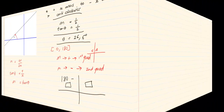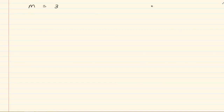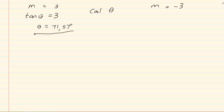Let's try another example. If m is equal to 3, we can immediately say tan theta is equal to 3. In your calculator, press shift, tan, 3. Rounding off, we get theta is equal to 71.57 degrees. Since the gradient is positive, we are in the first quadrant — and since we are on a straight line, we only work in the first or second quadrant. Being in the first quadrant means theta is as it is: theta is equal to 71.57 degrees.